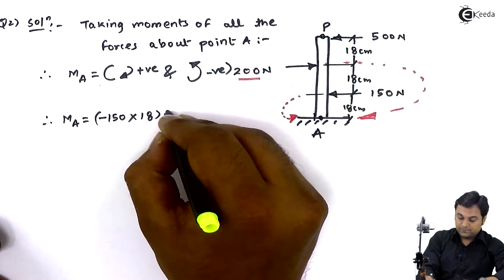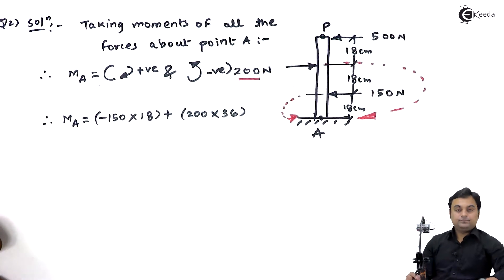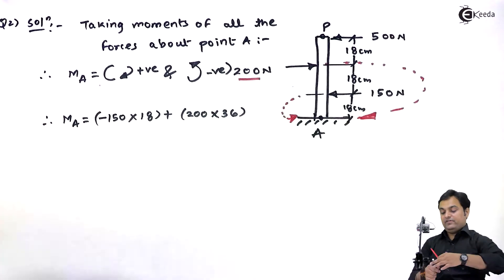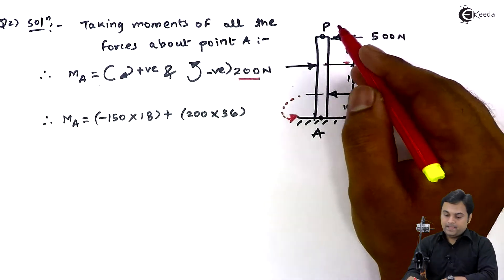At last we have another 500 Newton force at the top. If I take the moment, since it is acting towards left, moment would be produced in anti-clockwise direction.